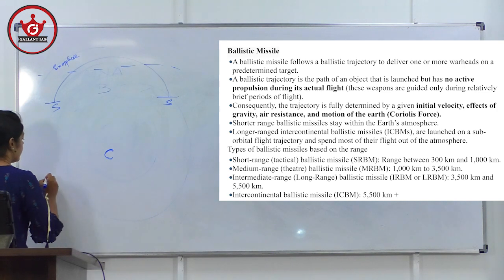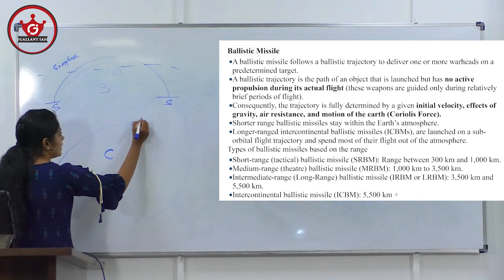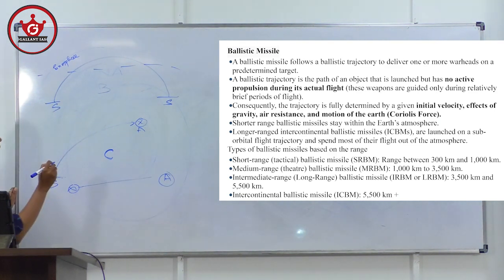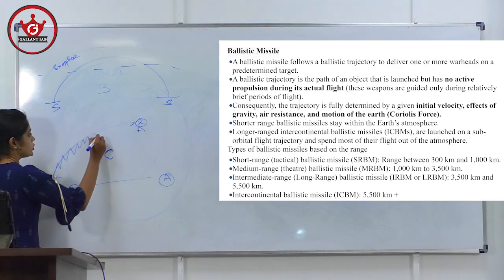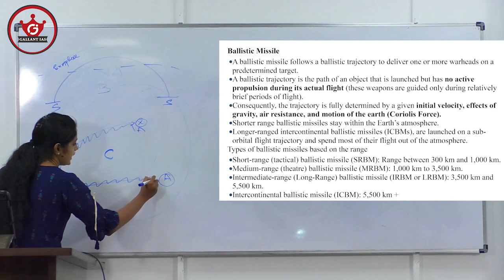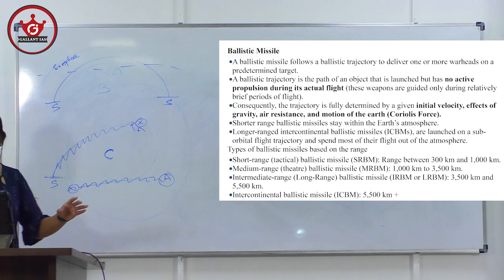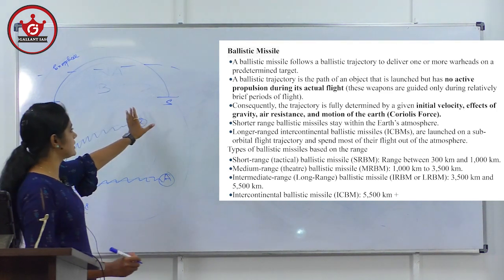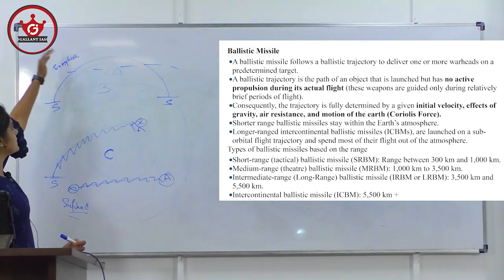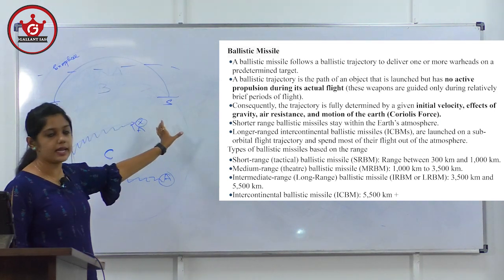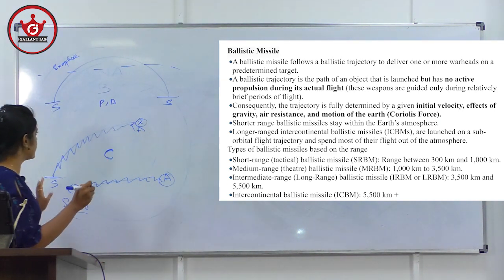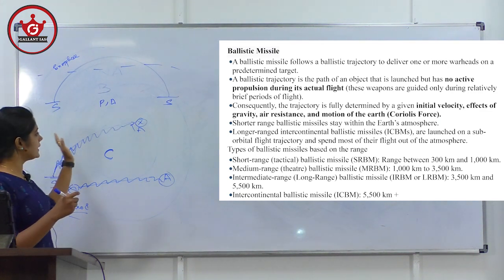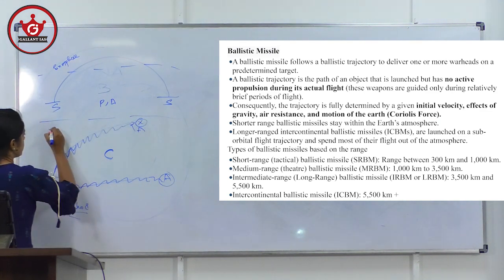Coming to cruise missiles — they are surface-to-air or air-to-air missiles, used to target aerial objects. Their motion is in a zigzag manner. If deployed from air, we need aircraft like Sukhoi. Most importantly, their entire travel is within the atmosphere — they won't enter the exosphere. That is a key difference: ballistic missiles go beyond the atmosphere into the exosphere, while cruise missiles remain within the atmosphere throughout.